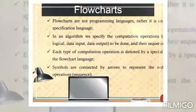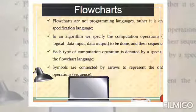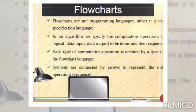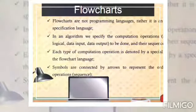computation, and results. And each type of computation operation is denoted by a special symbol in the flowchart language. Symbols are connected by arrows to represent the order of the operation or the flow or the direction of that operation.